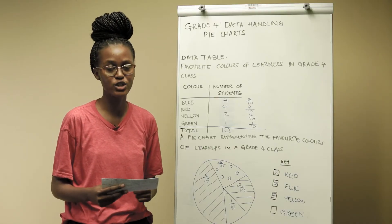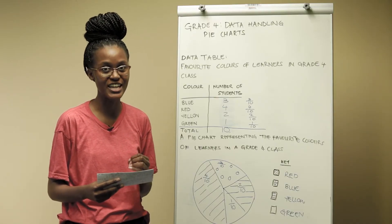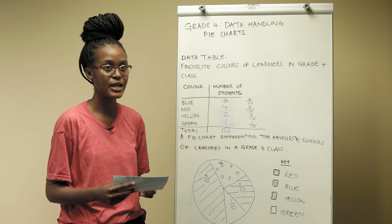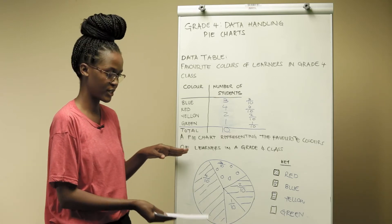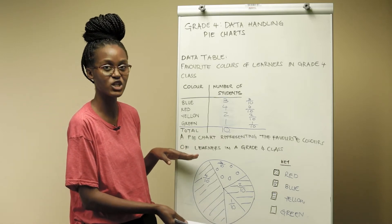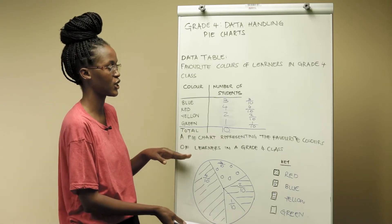In this lesson it is important to make sure that the learners understand what a pie chart is. It is a chart that is used to represent data from different categories, the proportion or the fraction of data from different categories.